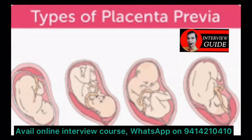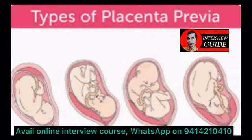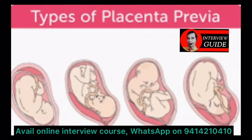Third is succenturiate placenta, in which an inappropriately divided placenta is present — one large placenta and one small lobe. The clinical significance is that the small lobe could be forgotten or left in utero after a normal delivery.